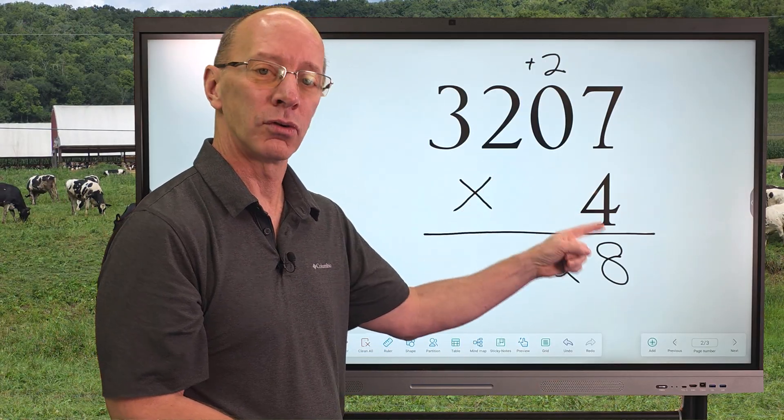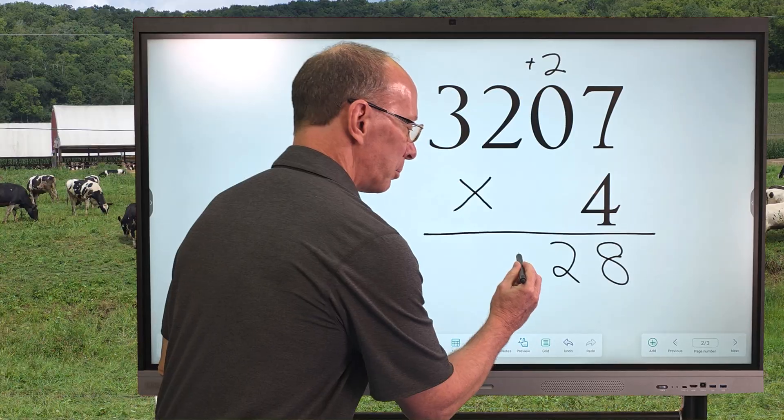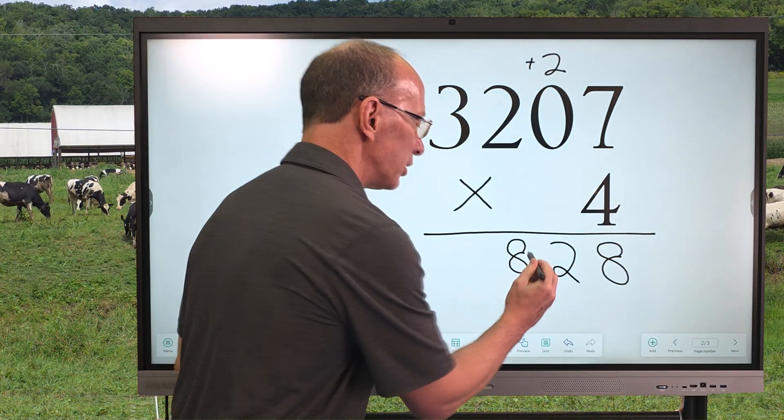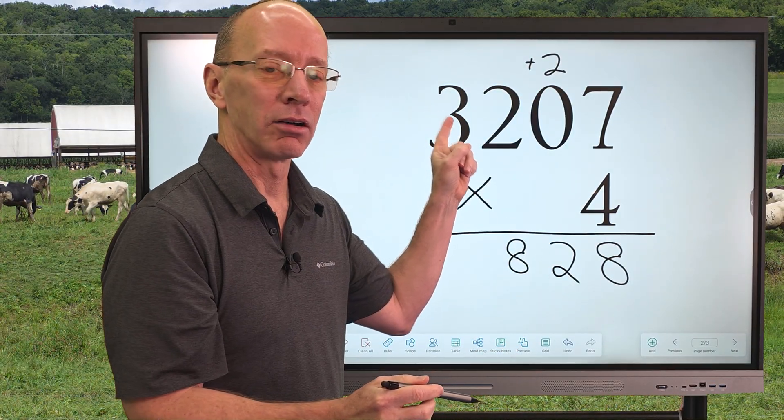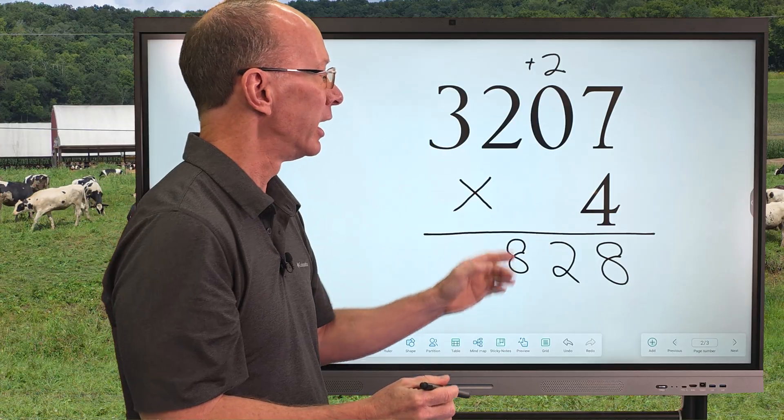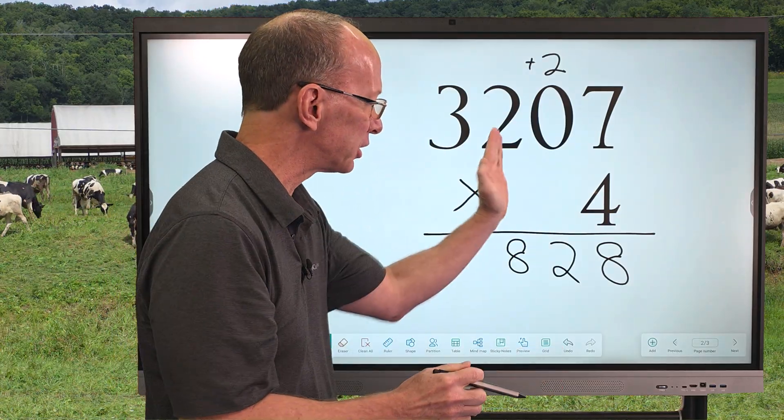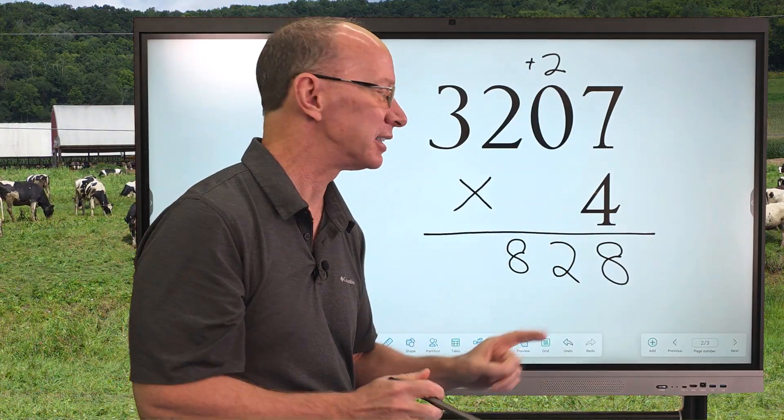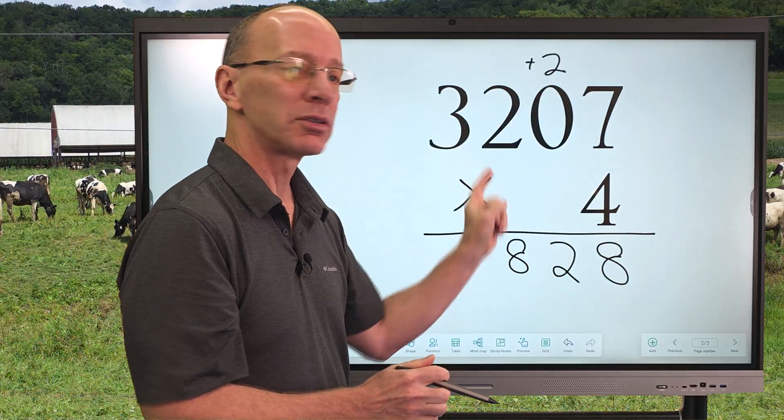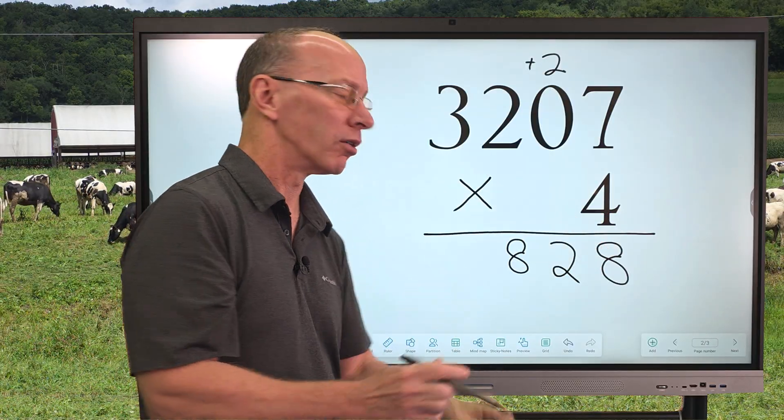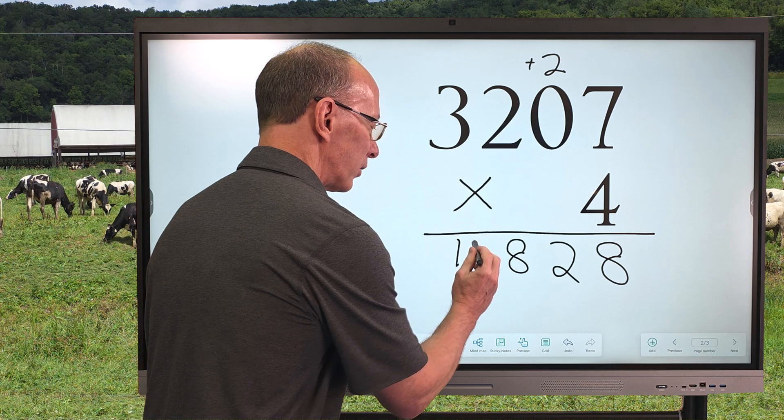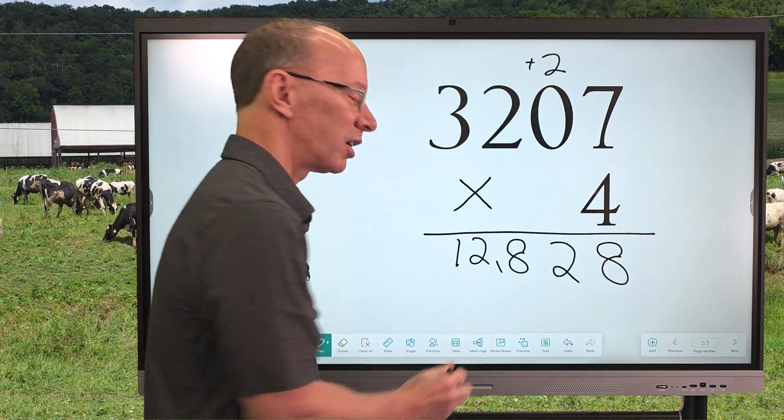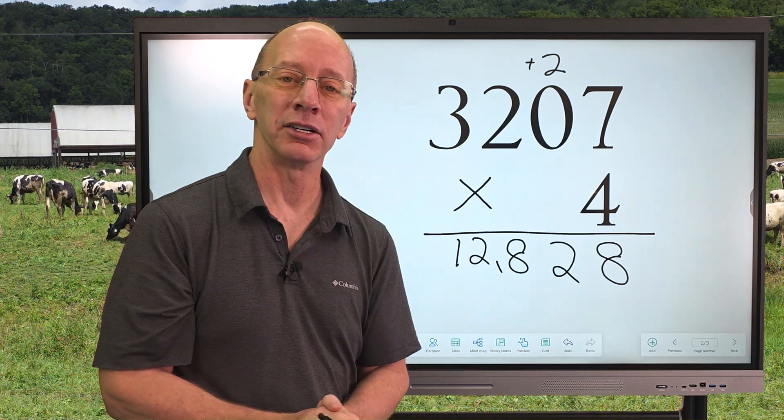Then I work on the next number which would be 4 times 2. 4 times 2, 8. So, I put the 8 right here and we don't have a number to carry at all. When you're writing these numbers make sure they're all lined up and very neat. What is 4 times 3? 12. So, I'm going to put 12 right here and that is our answer, 12,828.